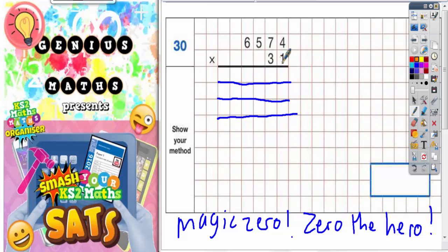So one times four, one times seven, one times five and one times six. Here we go. One times four is four, one times seven is seven, one times five is five and one times six is six.